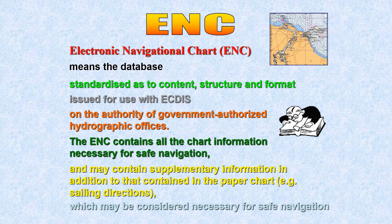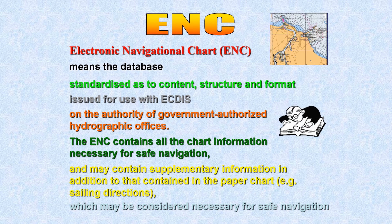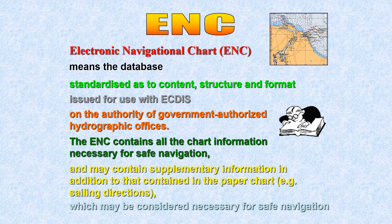Although ENC is called a 'chart,' you cannot draw courses on an ENC. ENC is a database. Together with the systems and software, it leads to the SENC — the transformation of the ENC that allows the chart to be displayed on the ECDIS system. To procure and install ENCs onto a particular ECDIS, the user needs two license keys: a user permit and a cell permit.